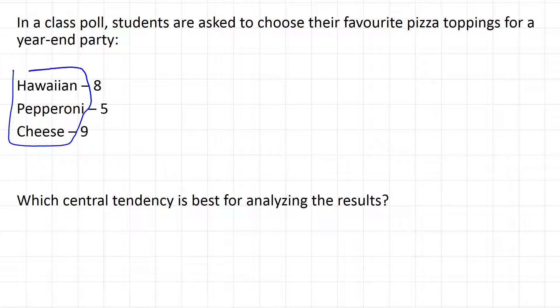Take a look at our values: Hawaiian, pepperoni, and cheese. Can we take a mean? No — there's no average type of pizza, unless you throw all the toppings on one pizza, which doesn't make any sense. There's also no helpful median here, because you can't order Hawaiian, pepperoni, or cheese from least to greatest to find a middle. So which central tendency is the best? The mode. Cheese repeated the most often, so cheese should be bought for the pizza.